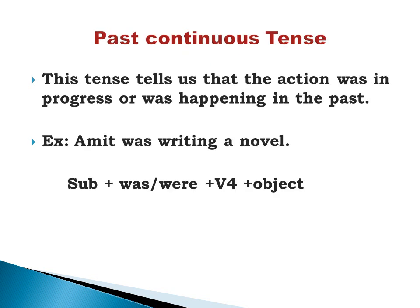Past continuous tense tells us that the action was in progress and was happening in the past. Example: Amit was writing a novel. Formula: subject + was/were (depending upon the number as well as the person of the subject) + ing form of the verb (present participle, V4) + object.